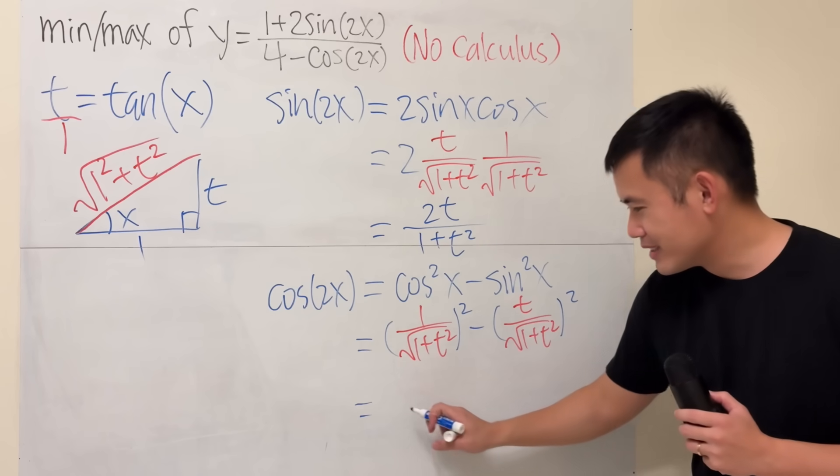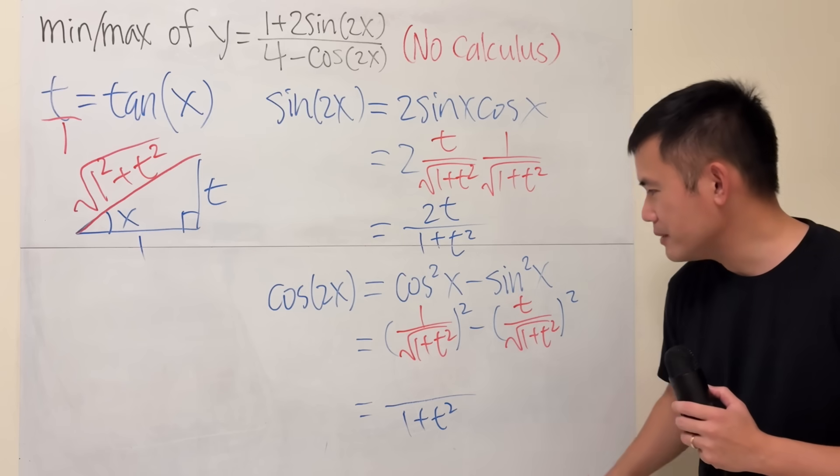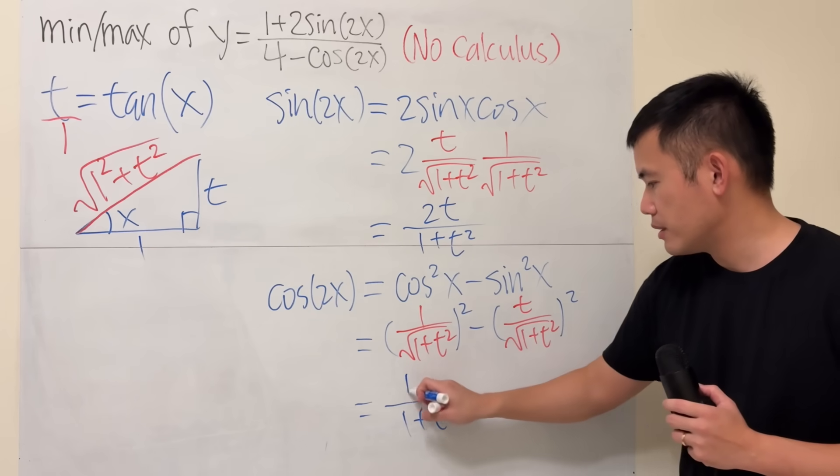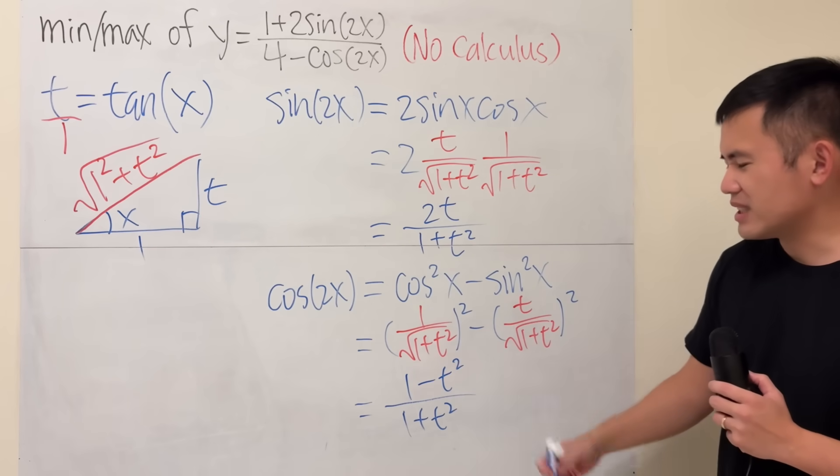And we see that they will have the same denominator. Square, square root cancel. Square root, square, cancel. So, we will just have 1 plus t squared on the bottom. And the top right here is just 1 minus t squared. And we cannot simplify this anymore.